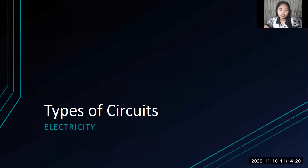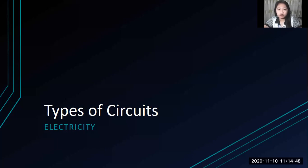Hello Grade 8. This is the continuation of our lesson in electricity. Last time we discussed what an electric circuit is, the elements of the circuit namely voltage, current, and resistance, and the relationship of those three elements through Ohm's law, including solving the equation using V = IR.